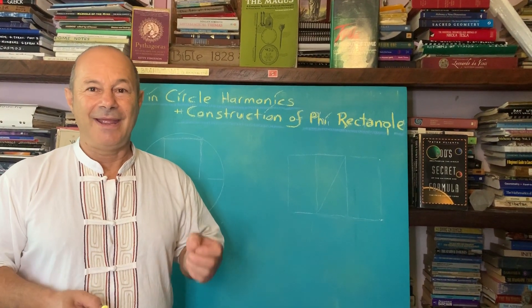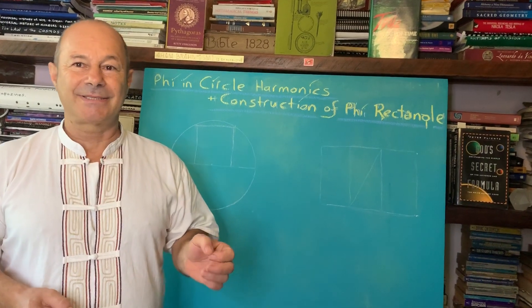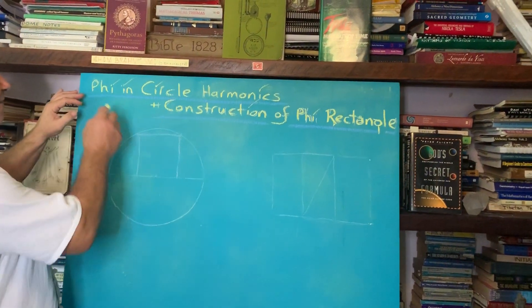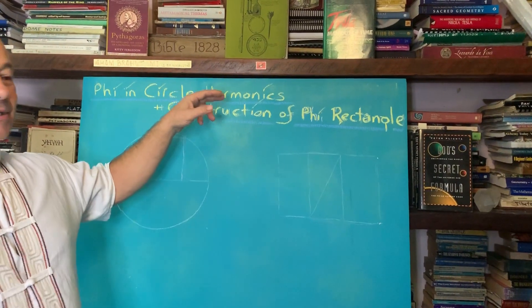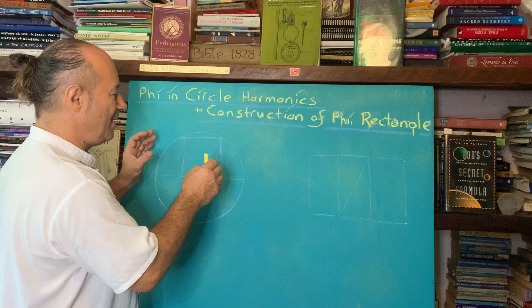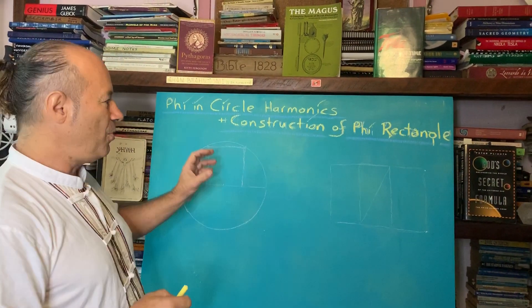I would like to show today how the true value of pi must be based on 1.618. That's what we mean by phi in the circle harmonics. When we draw the circle, we need to know that the golden ratio is part of the matrix, the womb of creation.